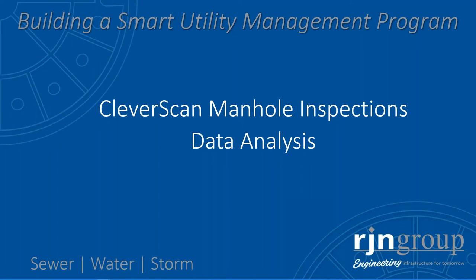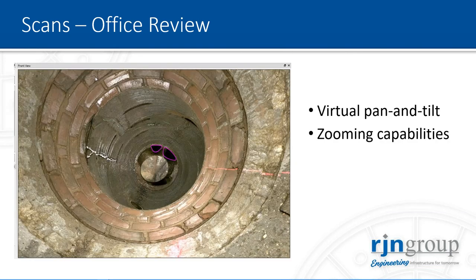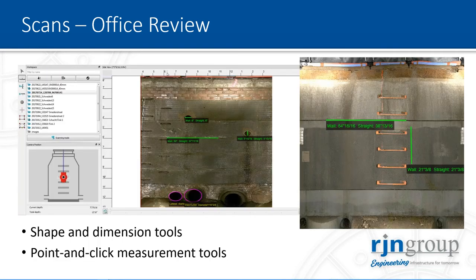Once the scan is accomplished, most of the work happens in the office. Data is downloaded from the portable external drives, and WinCAN software reviews the information received. All of these scans are reviewed for NASSCO level one or two, and you can do as much or as little call-outs within your scans. You can take the camera and internally scan and pan, zoom in and out of the manhole — looking vertically as well as a 360-degree view as if you were actually in the manhole structure. You can then use the software to highlight and identify the pipes coming in as well as the defects found, and use measure and dimension tools to identify pipe sizing, step conditions, and how extensive those defects are.